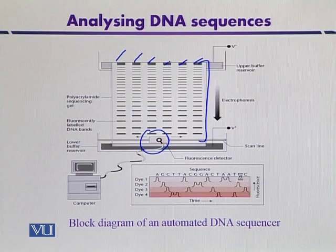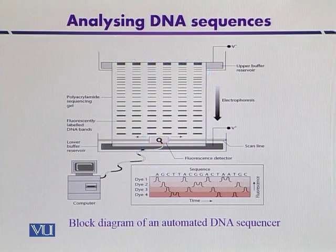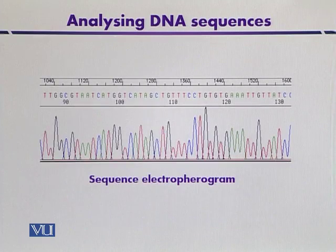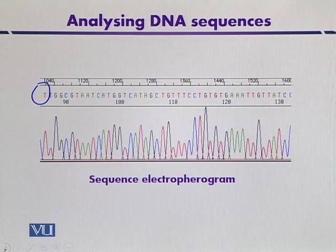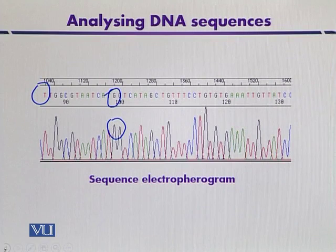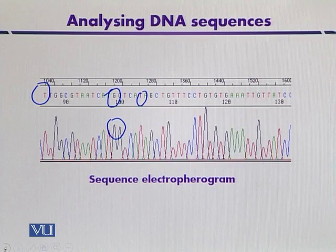Each base has its own fluorophore. For example, the color for thymine is red, for guanine it is black — corresponding to a black peak — and green is for adenine. Different fluorophores are assigned to their respective dideoxynucleoside triphosphates, so whenever the chain reaction is terminated, it will be detected on the single lane within the gel.